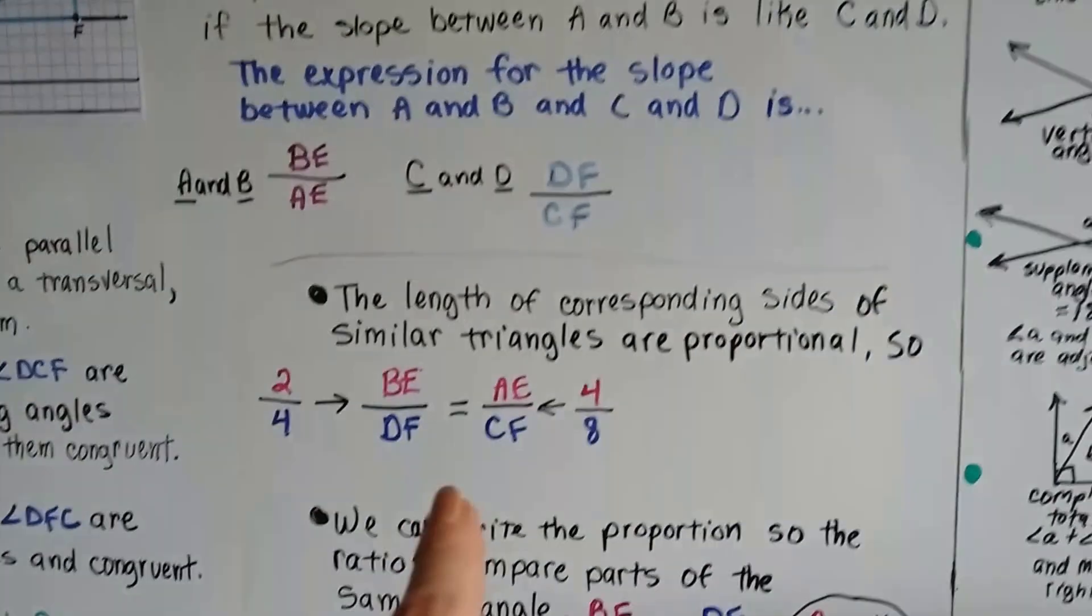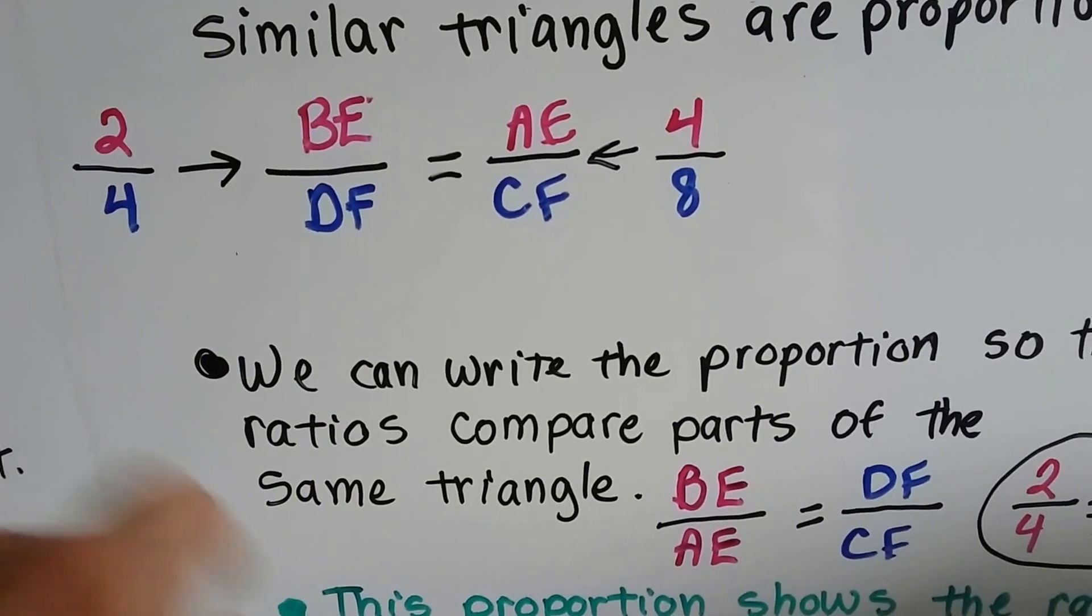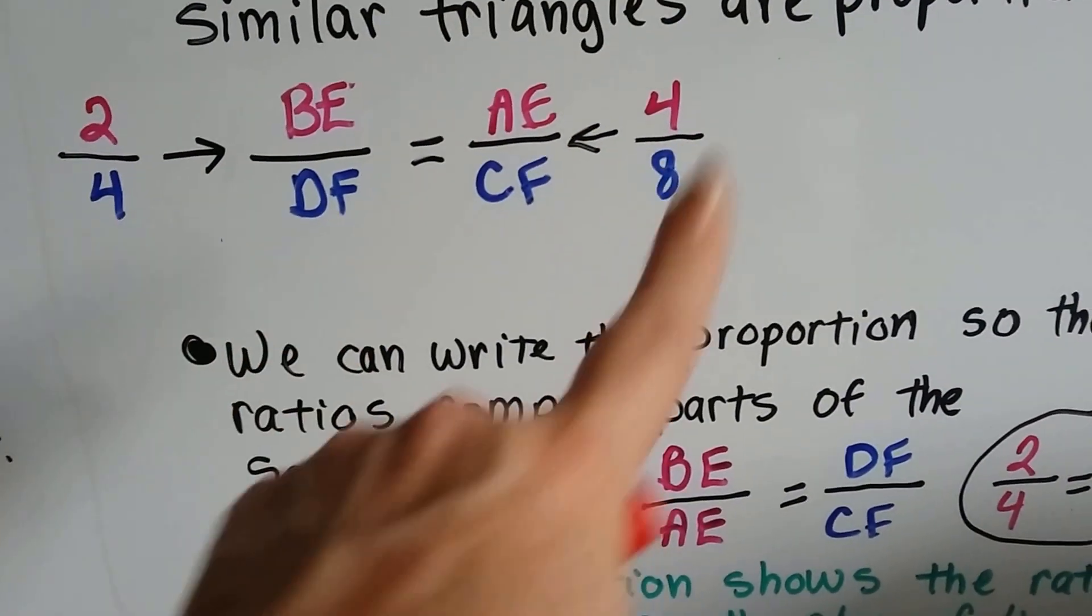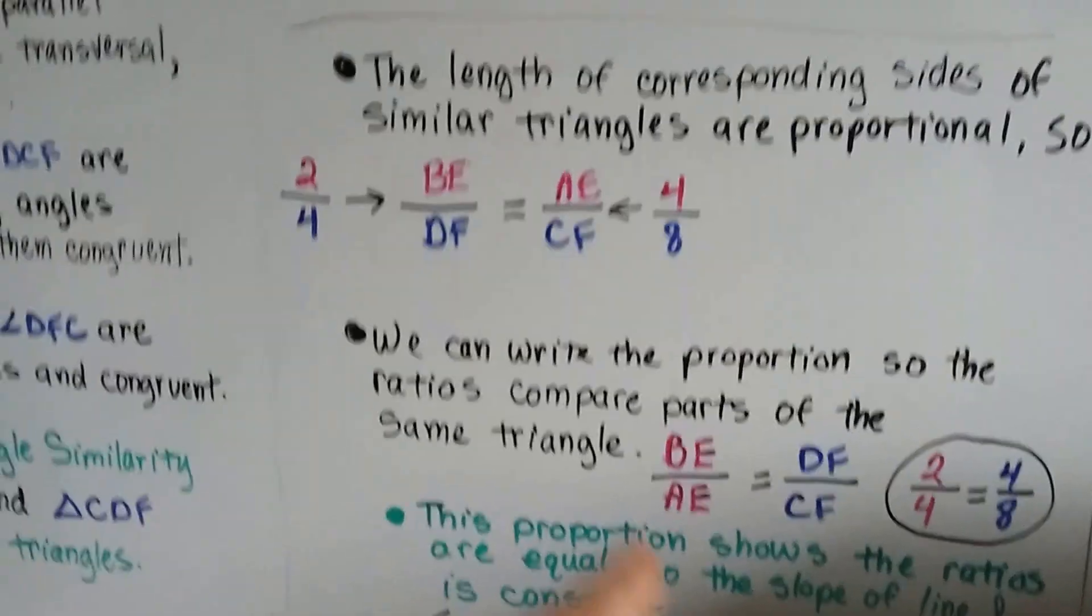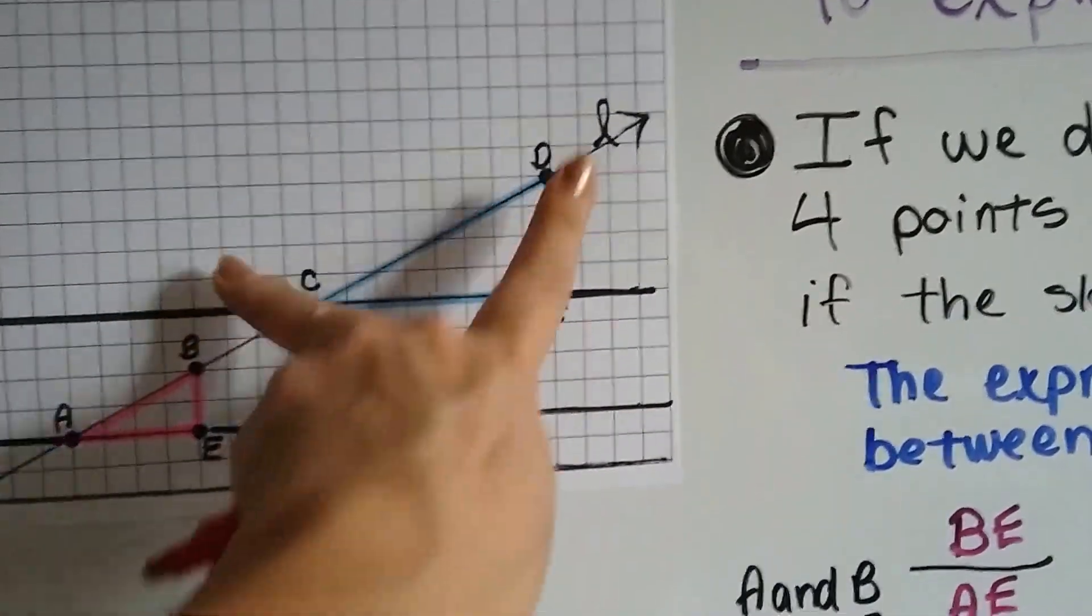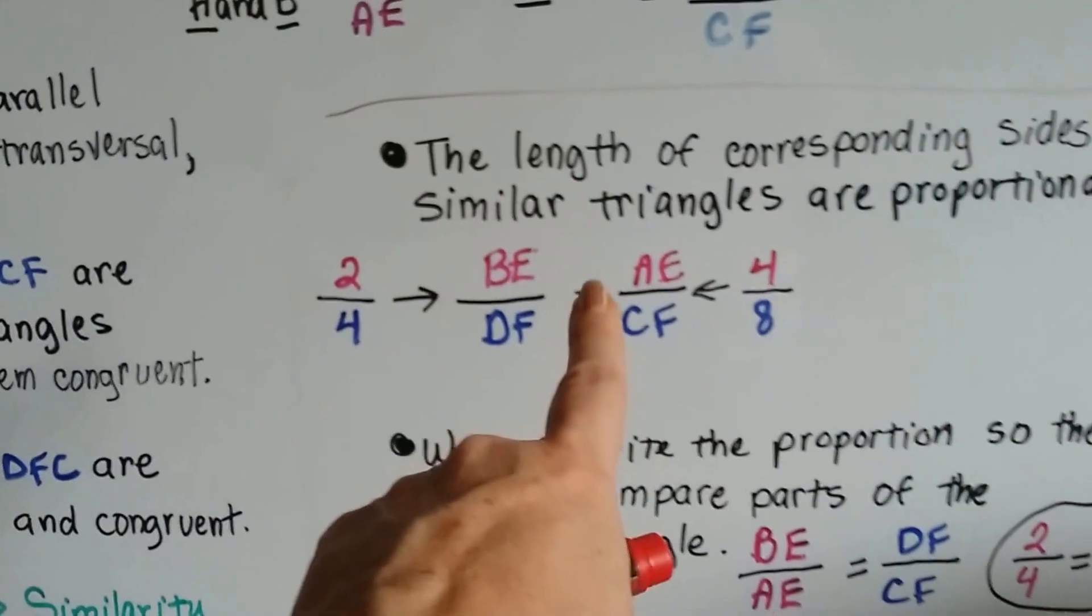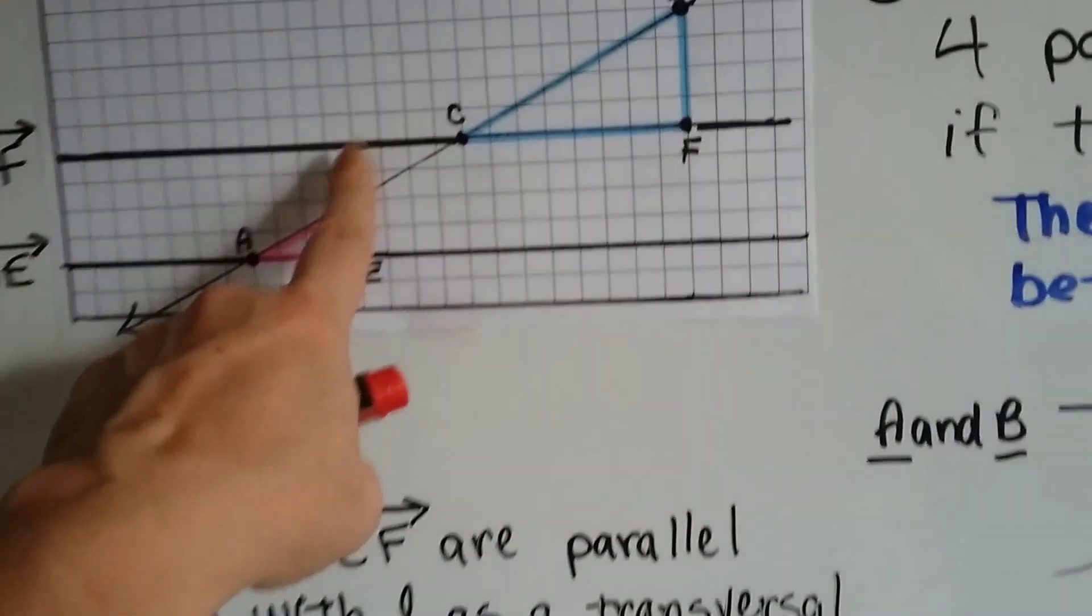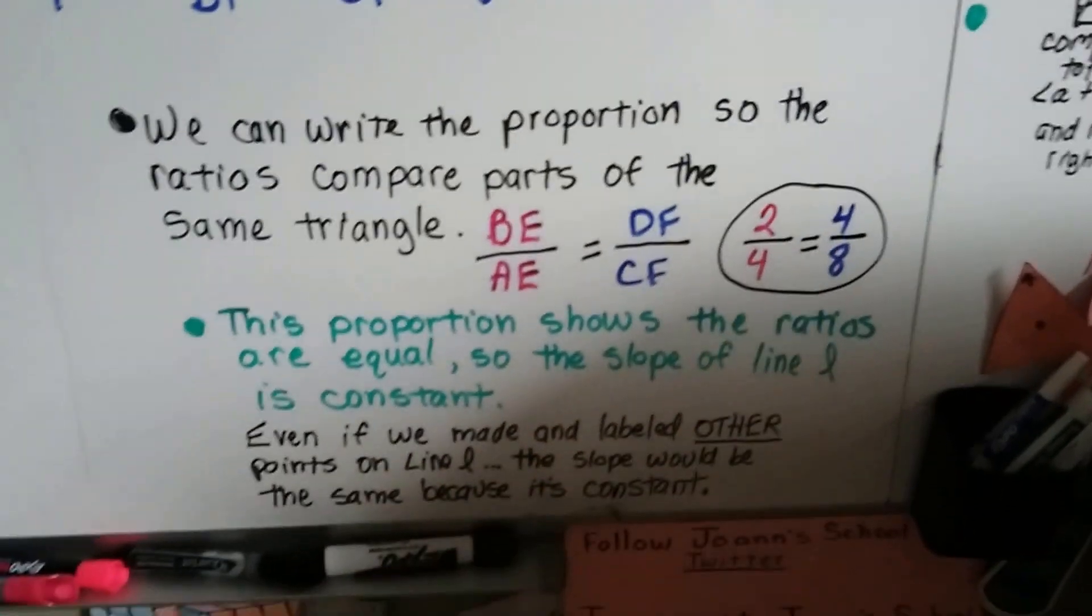The length of the corresponding sides of similar triangles are proportional. So we know if BE is 2 units, and DF is 4 units, and AE is 4 units, and CF is 8 units, 2 fourths is equal to 4 eighths. They're both half. We can write the proportion so the ratios compare parts of the same triangle. We can say BE over DF, so we took both rises and wrote them as a fraction, and then we took both runs. We can also take the same triangle and do it. So BE over AE is equal to DF over CF. 2 fourths is equal to 4 eighths.